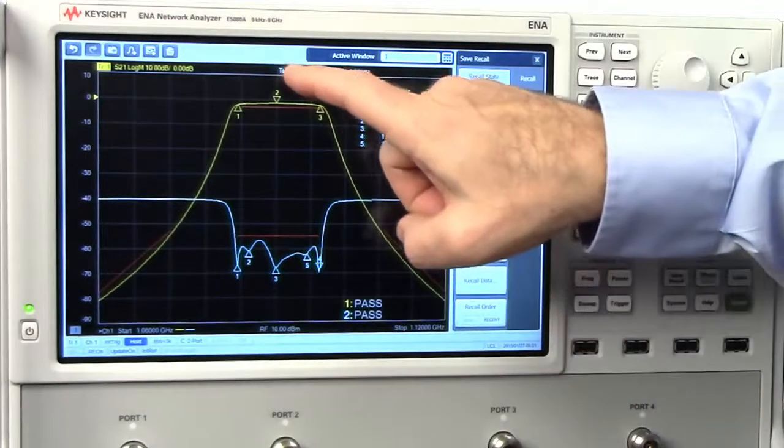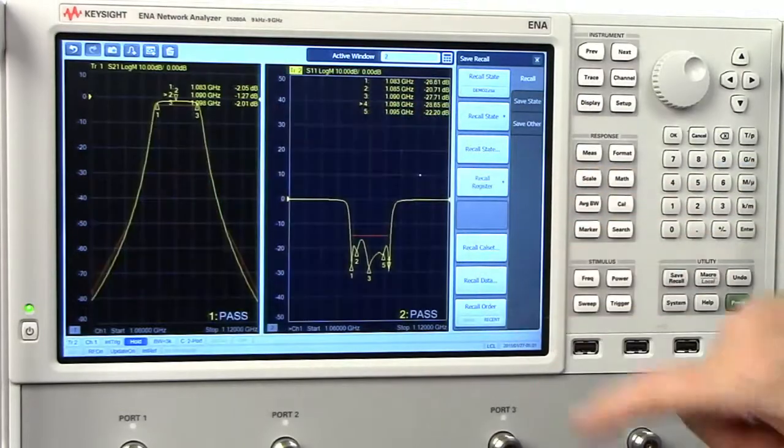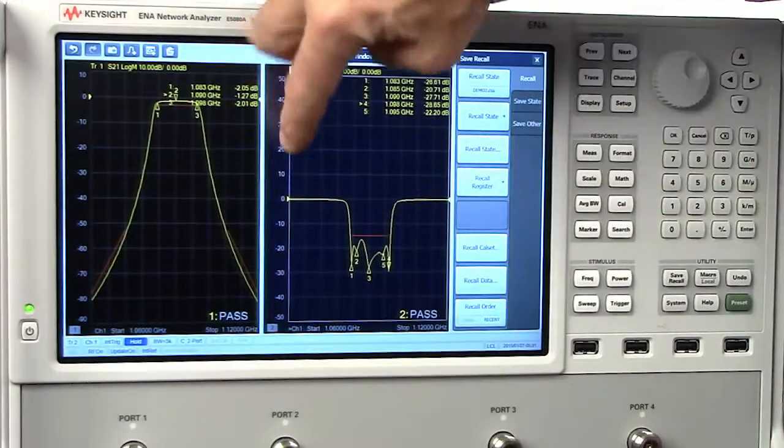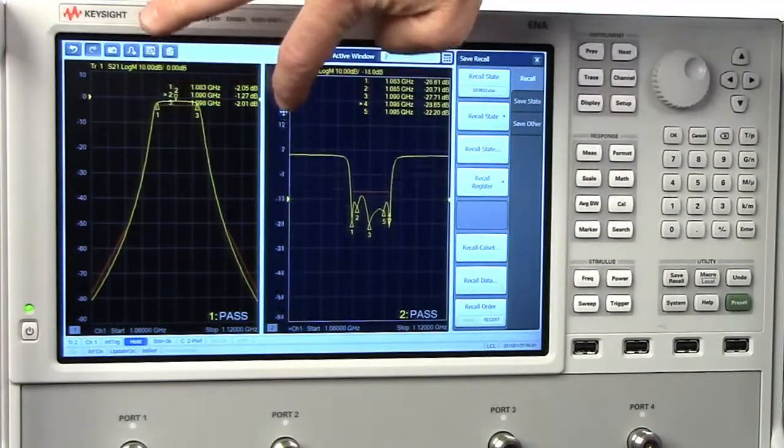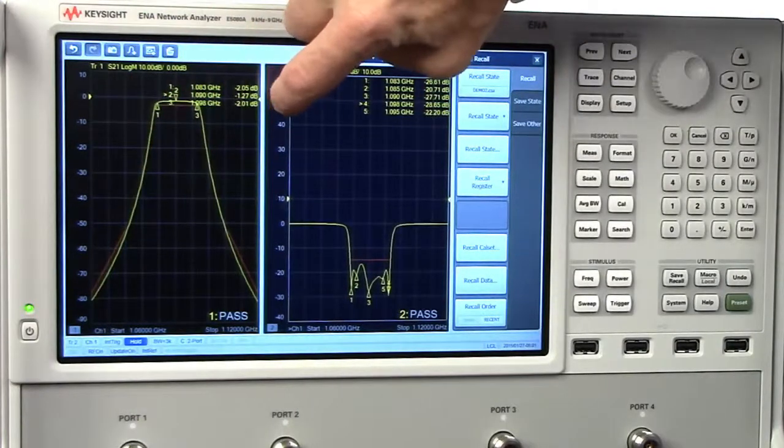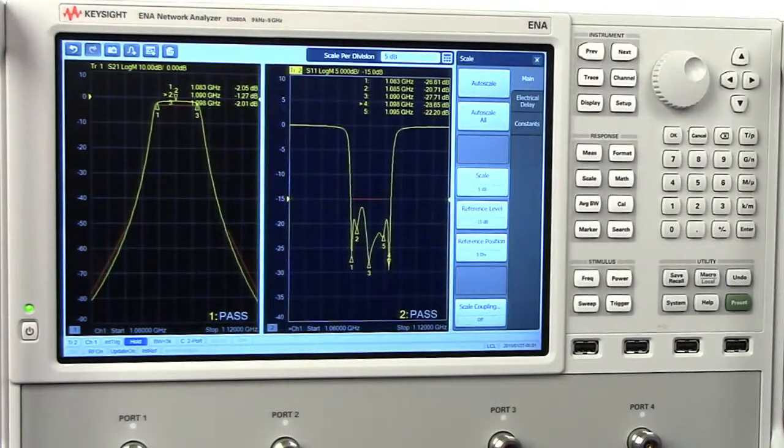You can change the layout of measurement traces in windows with fingertip drag-and-drop operations. With this touch-based interface, you can also change the reference level and scale and do auto-scale. This new UI will be familiar to existing ENA and PNA users.